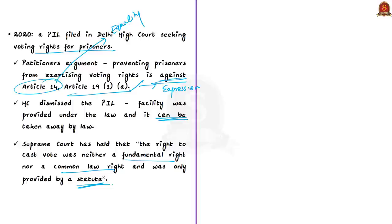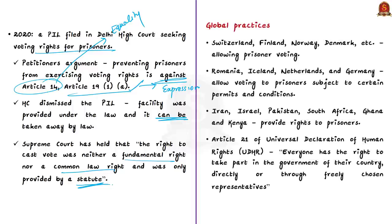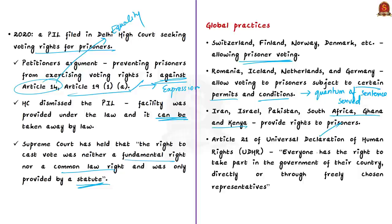Regarding the global scenario, many European countries like Switzerland, Finland, Norway, and Denmark allow prisoner voting. Countries like Romania, Iceland, Netherlands, and Germany have opted for a middle path, where voting is allowed subject to certain conditions such as the quantum of sentence served. Countries like Iran, Israel, Pakistan, South Africa, Ghana, and Kenya also provide voting rights to prisoners. According to Article 21 of the Universal Declaration of Human Rights, everyone has the right to take part in the government of their country, and India is a signatory to the UDHR.